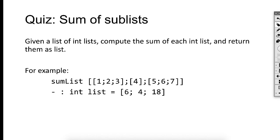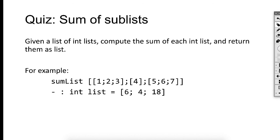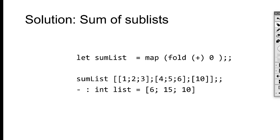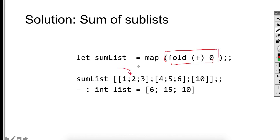We looked at five examples. Now it's your time to do two quizzes. Quiz one is sum of sublists — given a list of lists, calculate the sum of each sublist. The first sublist sums to six, the second to four, and the third to eighteen. The solution is: we apply fold to the inner list to calculate the sum of each list, then apply map to the entire list so this function is applied to each member, returning the sum of each sublist as a list at the end.